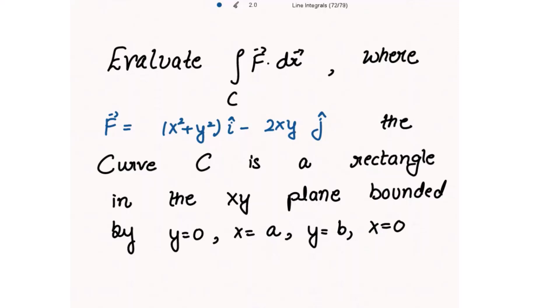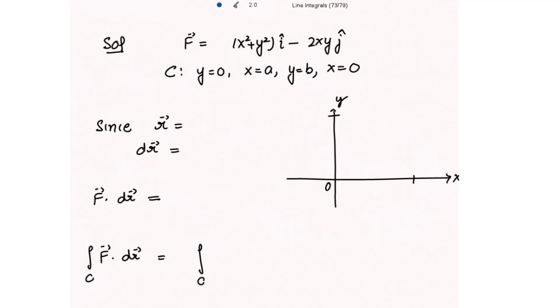We start with the line integral of the dot product of f vector dot dr vector, where f vector is given to us. The curve c is a rectangle in the xy-plane bounded by y equal to 0, x equal to a, y equal to b, and x equal to 0. We have to plot all these lines for the region.